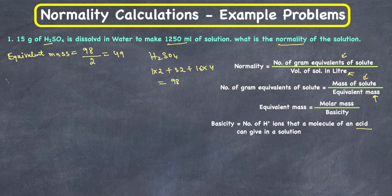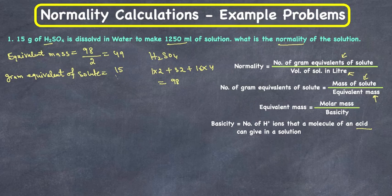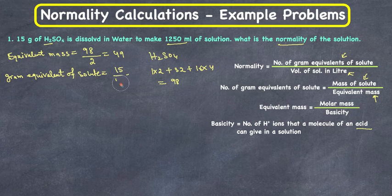Now let's calculate the number of gram equivalents of solute. Number of gram equivalents of solute = mass of solute / equivalent mass = 15 grams / 49 g/equivalent.